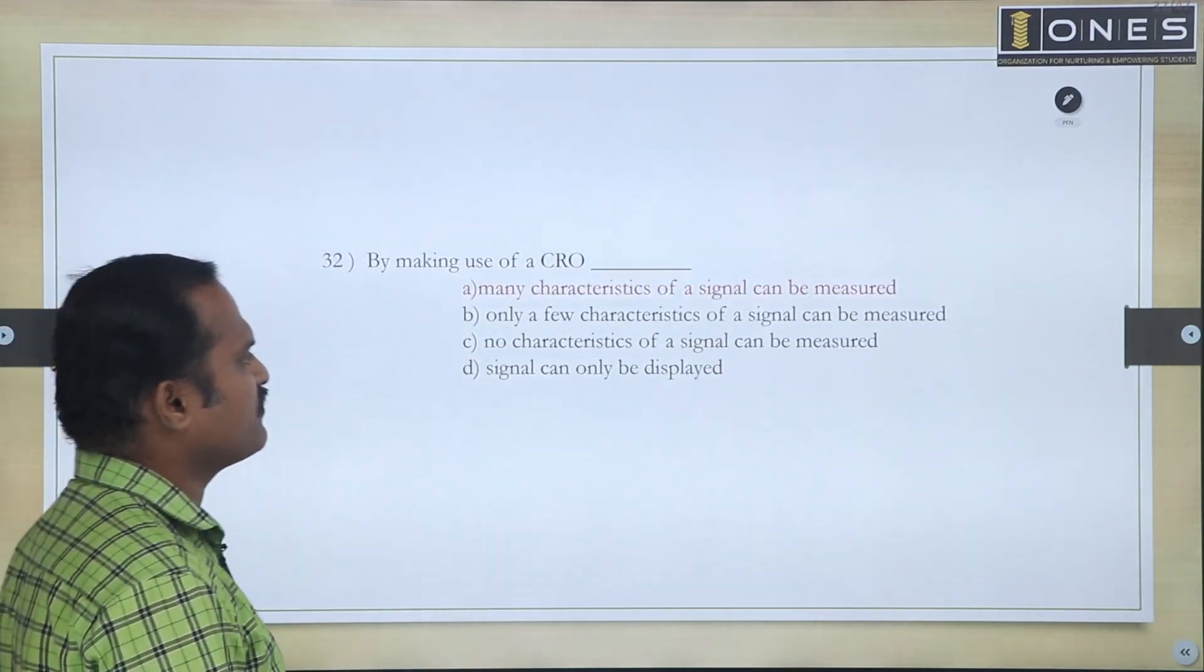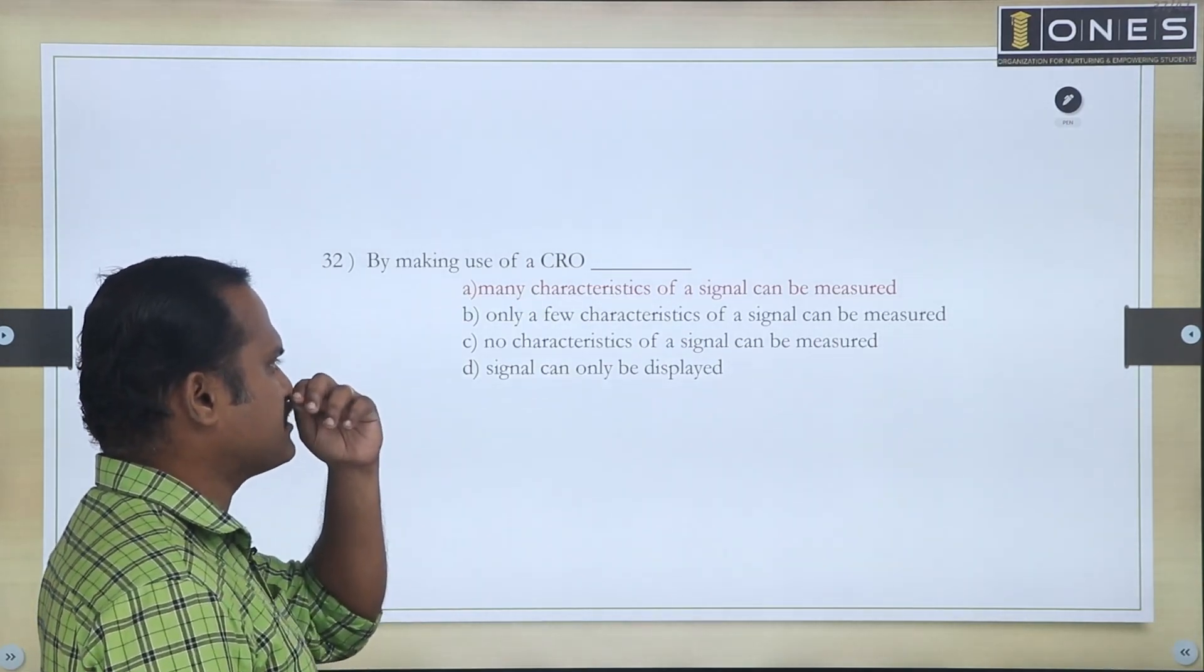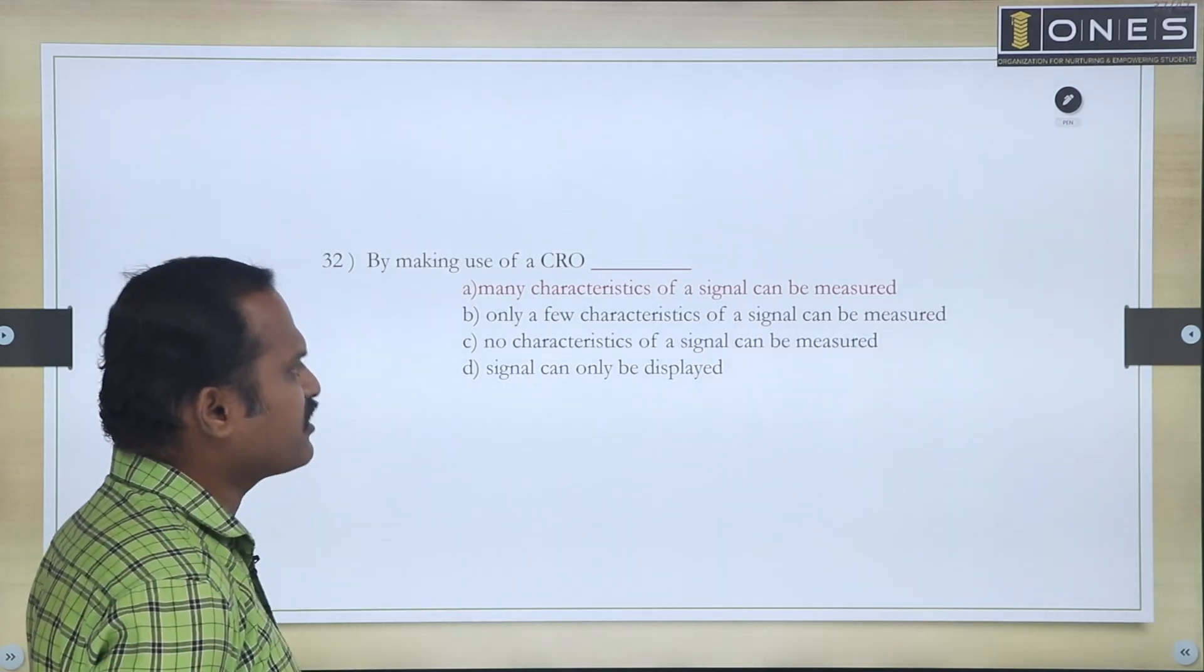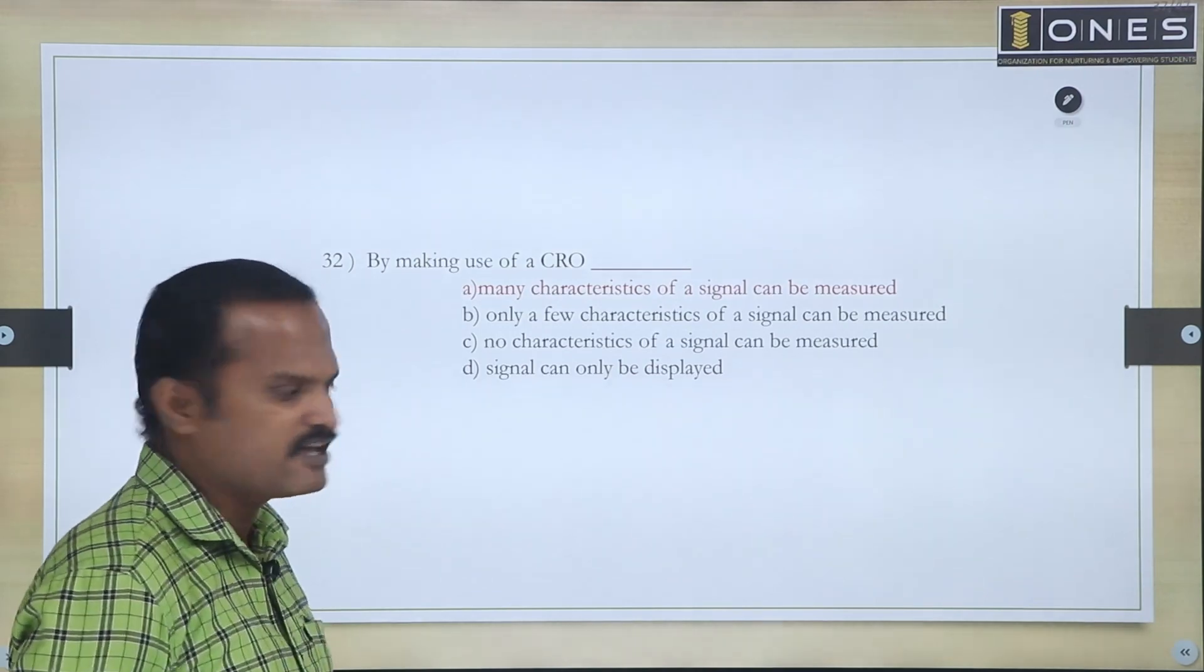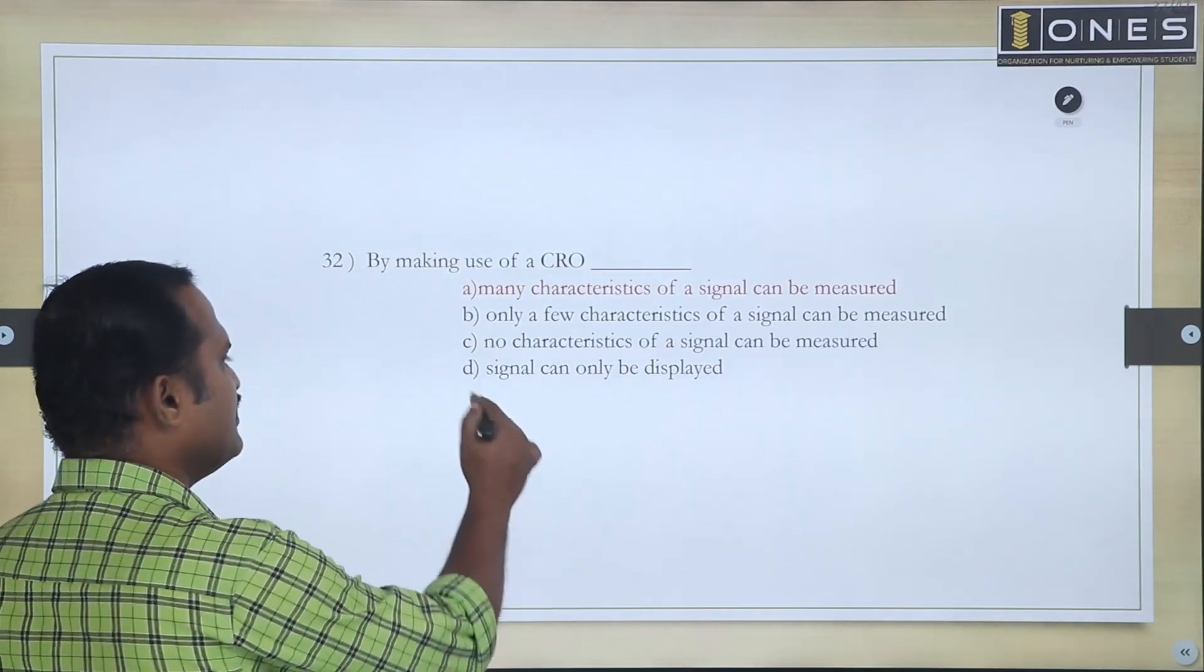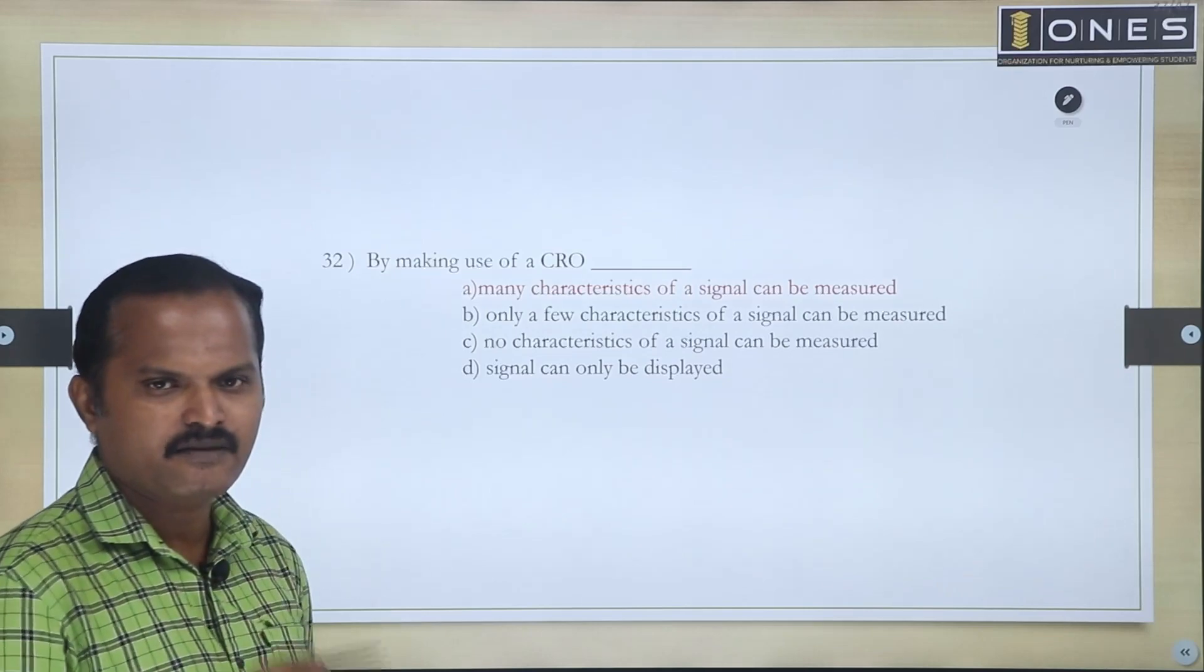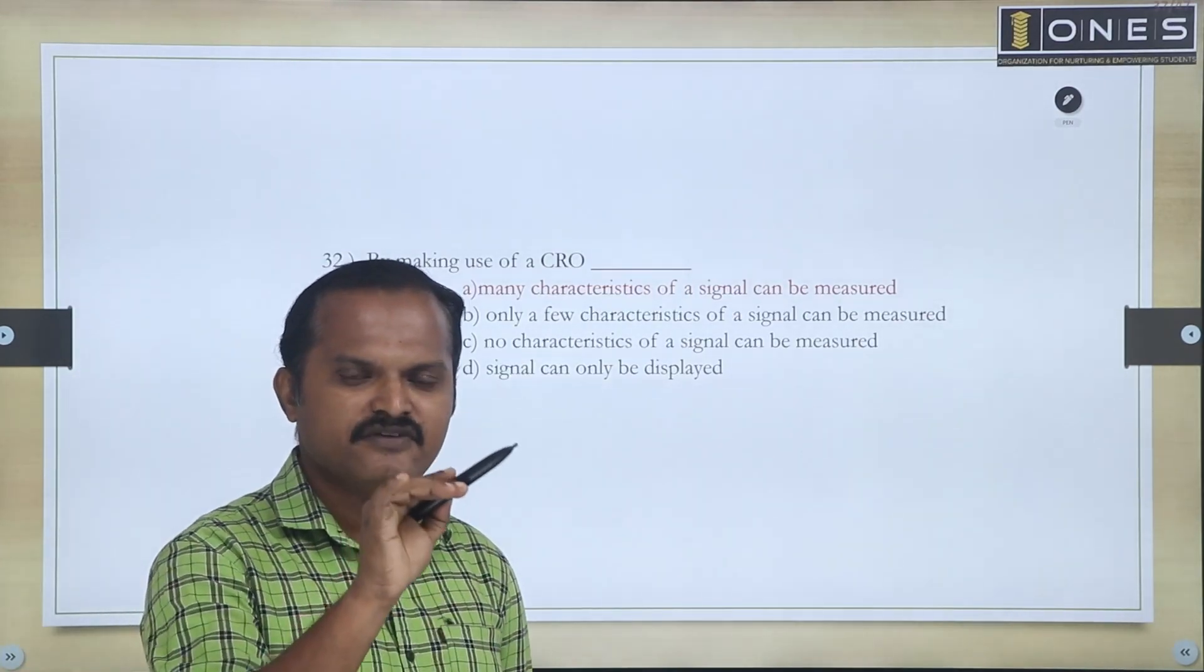Next question: By making use of CRO, the choices are: many characteristics of a signal can be measured, only a few characteristics of a signal can be measured, no characteristics of a signal can be measured. Last one, signal can only be displayed.